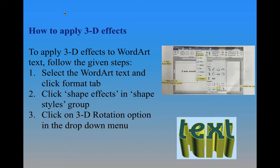Today we are going to learn about how to apply 3D effects in word art. To apply 3D effects to word art, you have to select the word art text and click the Format tab. When you click word art, the Format tab will appear automatically. Then you have to click Shape Effects in the Shape Style group.